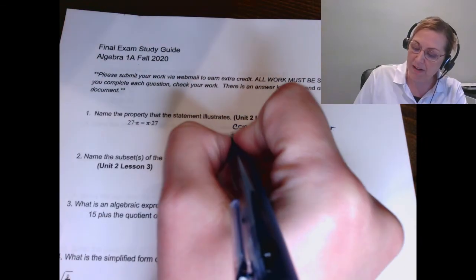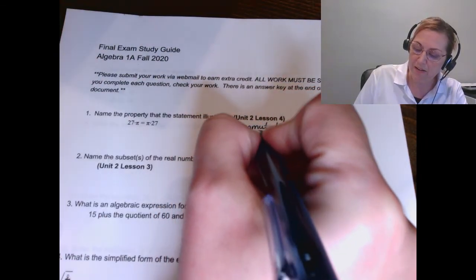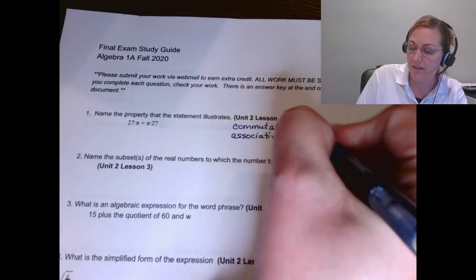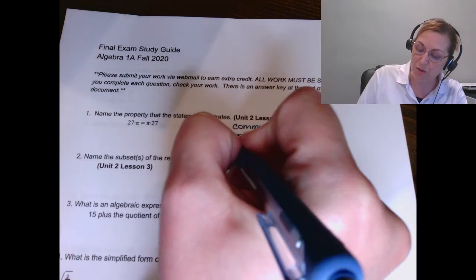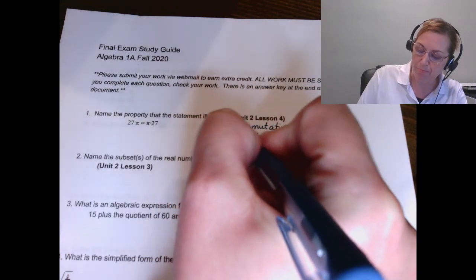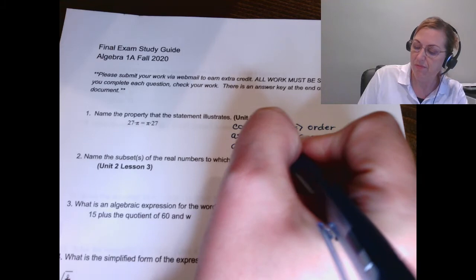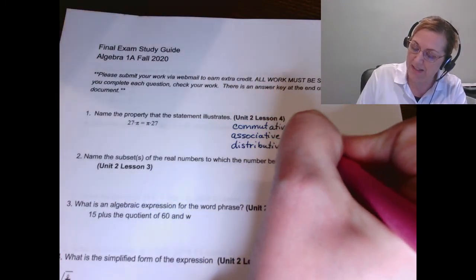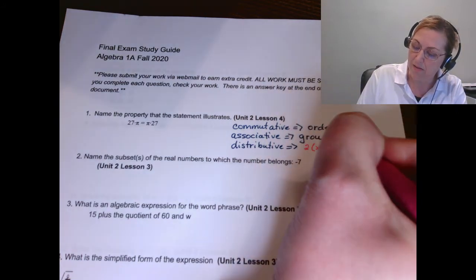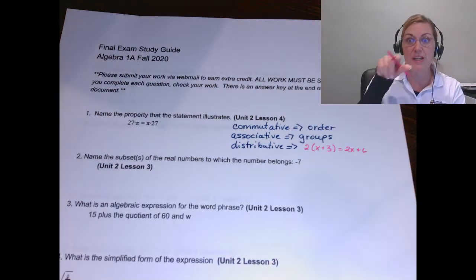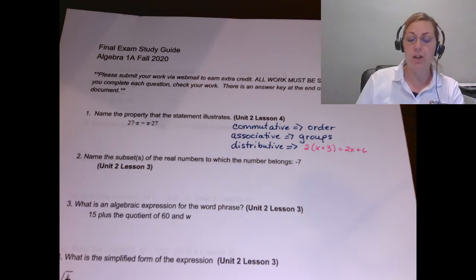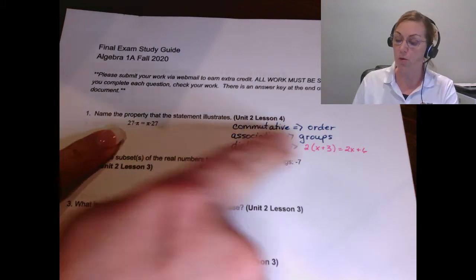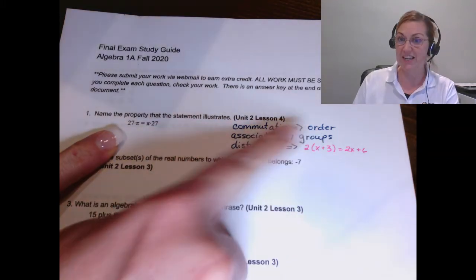We talked about associative property, which was about the groups changing. And we talked about distributive property. The only way I know to tell this one is to give you a little example so you have it here, where we distribute the two to the X and distribute it to the three.